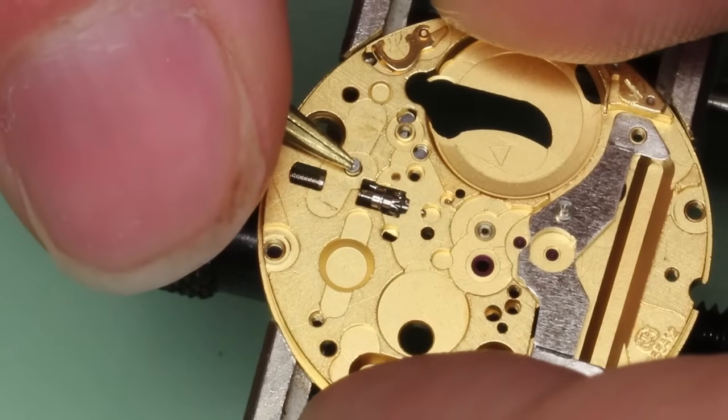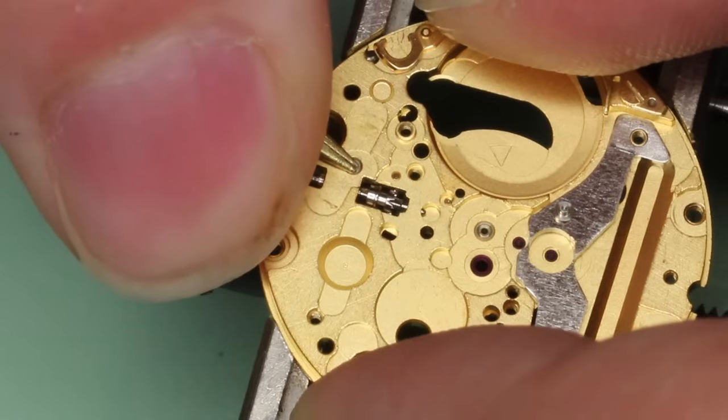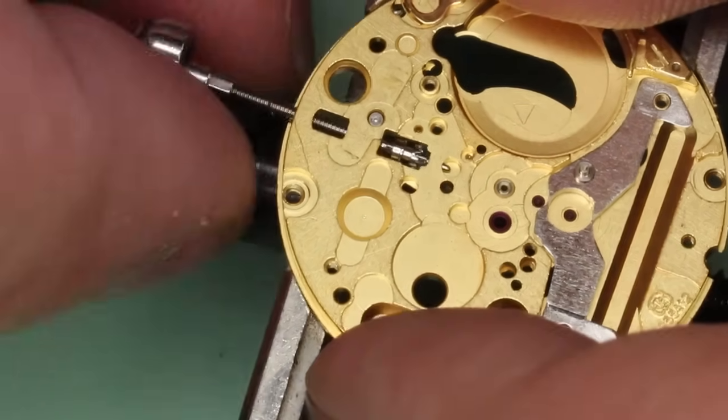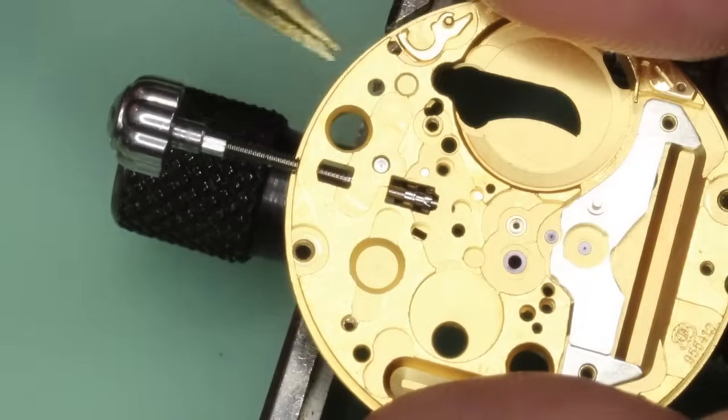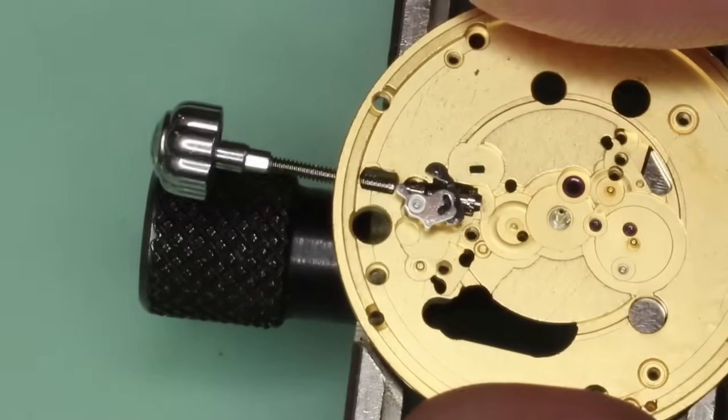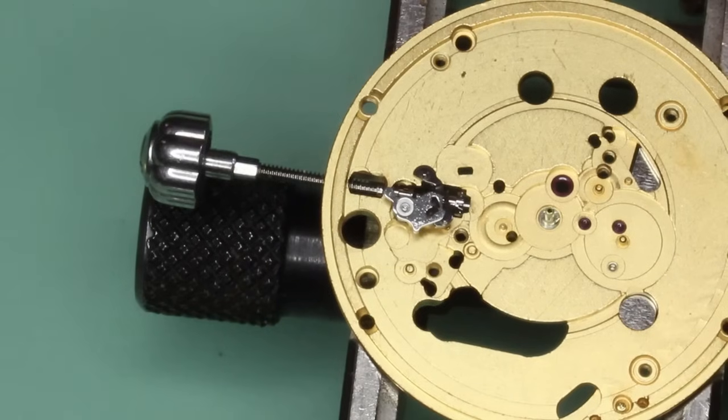And the bolt piece is being held quite tightly by the setting lever spring. So when you push this down, be careful because the setting lever spring could fall onto the bench. Be careful not to lose it. You can see in this case the setting lever spring has fallen onto the bench.